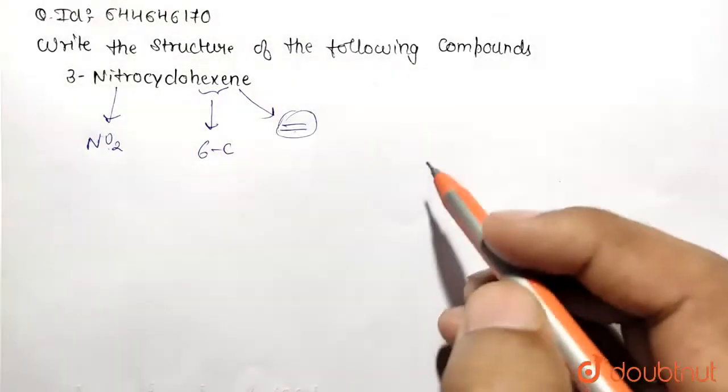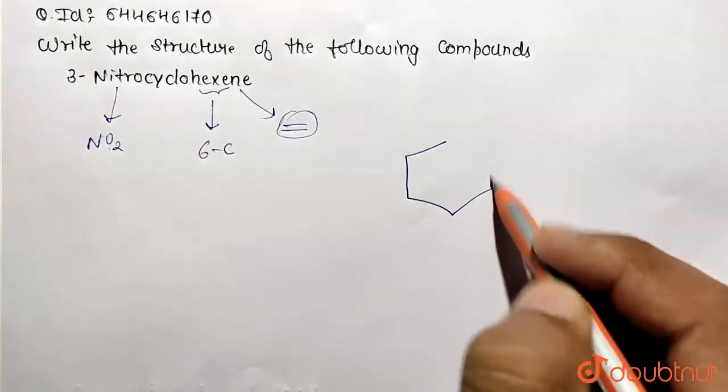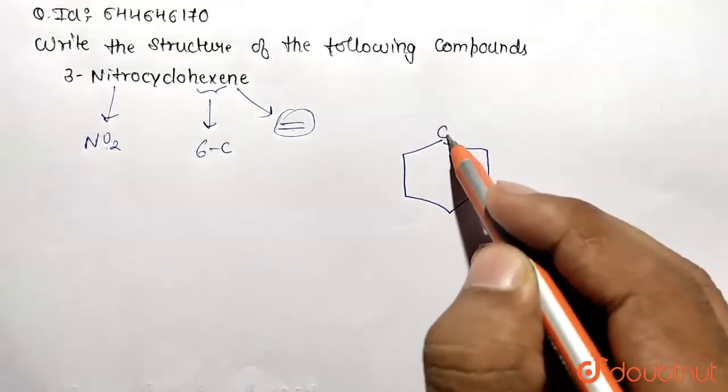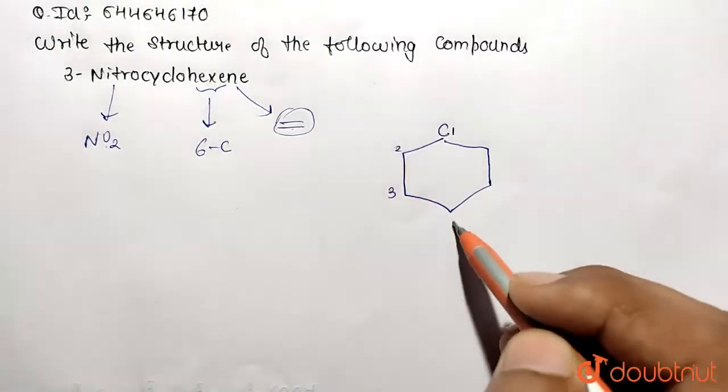So draw the carbon ring: hexene means one, two, three, four, five, six carbons. This is the first carbon, second carbon, third carbon, fourth carbon, fifth, and sixth.